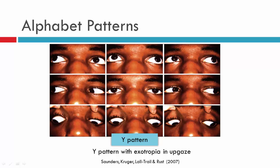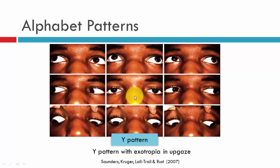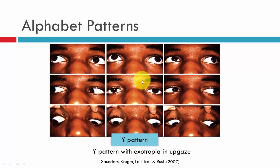Here we have a patient with a Y pattern. There is little deviation in primary position and little deviation in down gaze — maybe a slight exo, which a cover test will help confirm. There is very little difference between the deviation in primary and down gaze. However, when the patient looks in up gaze, we have a left exotropia, producing a Y pattern: little difference between primary and down, but a large increase in up gaze.